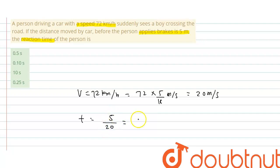And this equals to 0.25 second. So this is the reaction time of that person. So correct option is 0.25. So this is the correct option. So I hope you have understood this problem. Thank you.